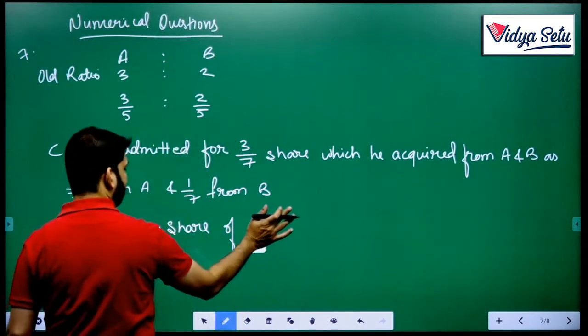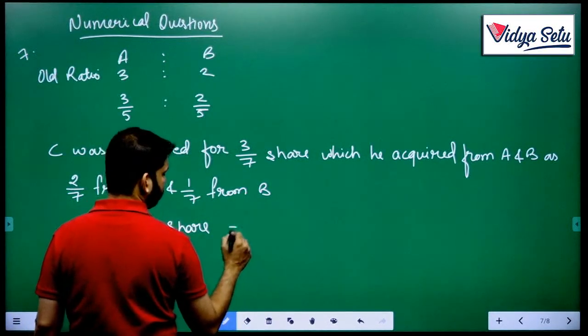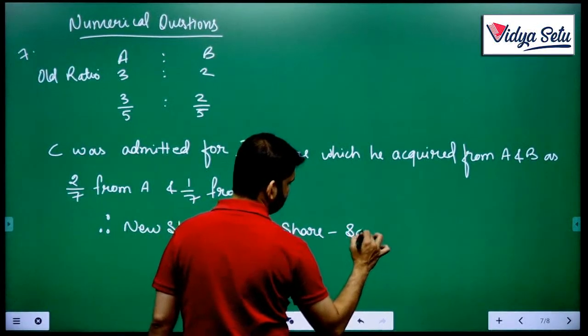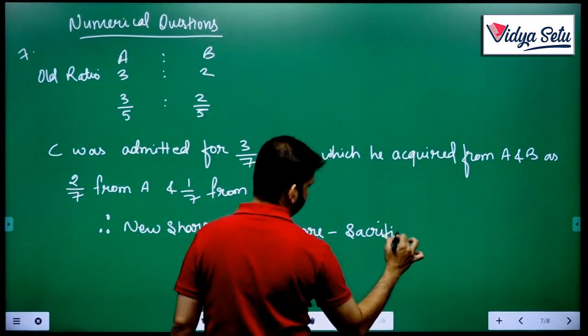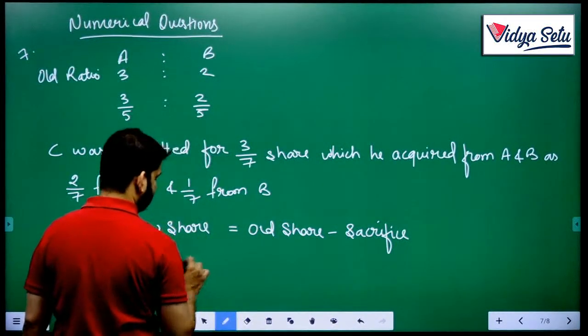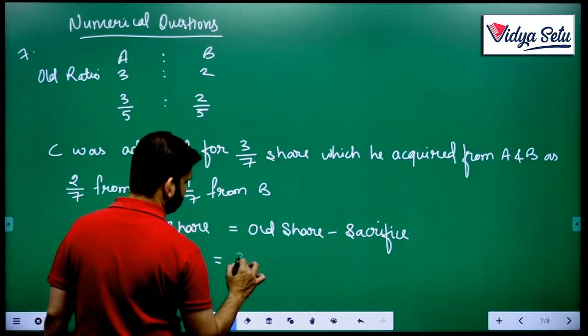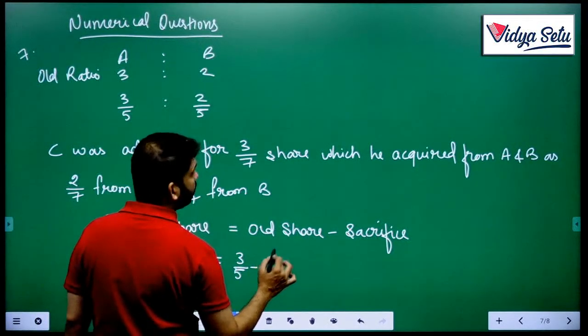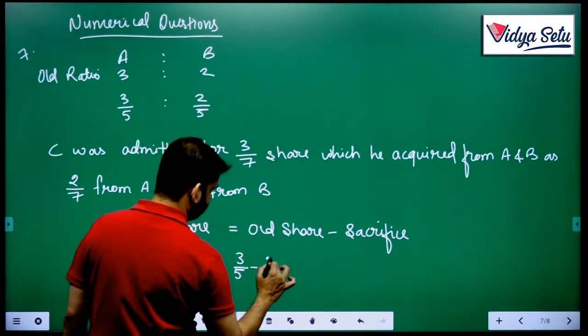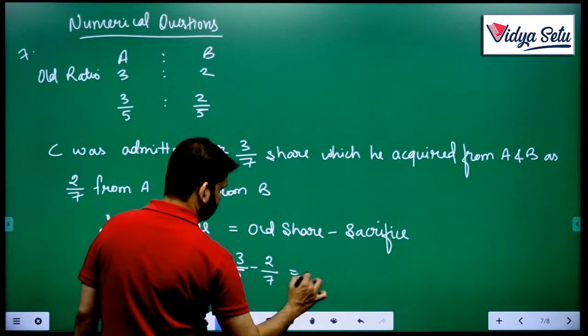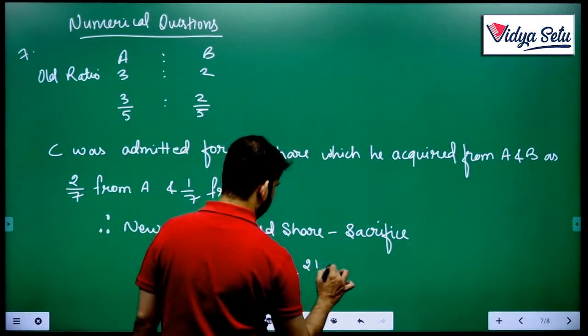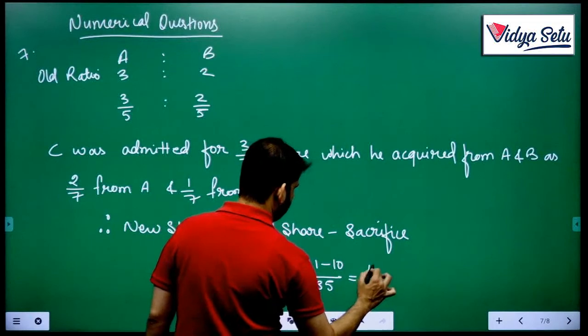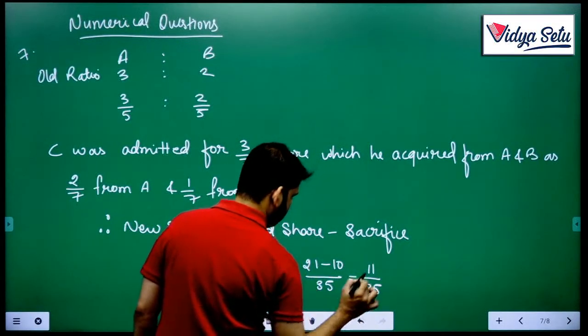We have to write the formula, new share equals to old share minus sacrifice. That is of A is 3/5 minus, he is sacrificing 2/7, that is 21 minus 10 upon 35 which gives me 11/35.